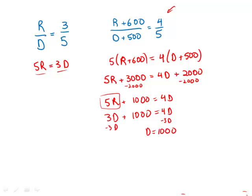The original number of Democrats registered was 1,000. 3 fifths of 1,000 is 600. So the original number of Republicans was 600.